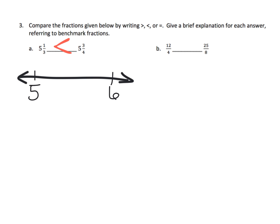On question B, I would turn both improper fractions into mixed numbers. Twelve-fourths equals three, and twenty-five eighths equals three and one-eighth. We now automatically know that three and one-eighth is larger than three, so twenty-five eighths is larger than twelve-fourths.